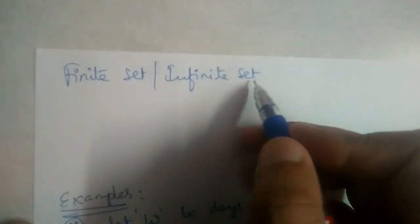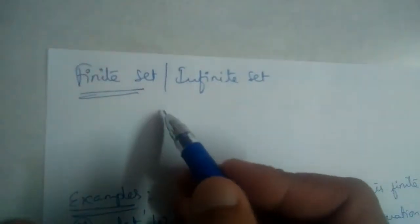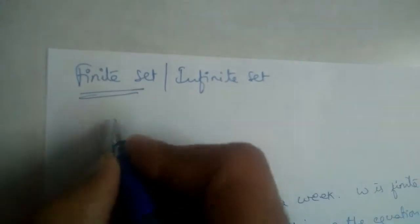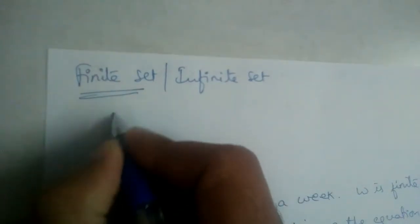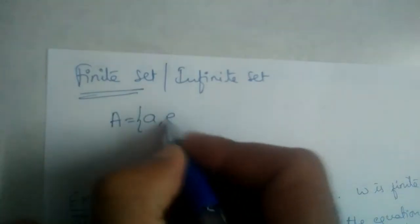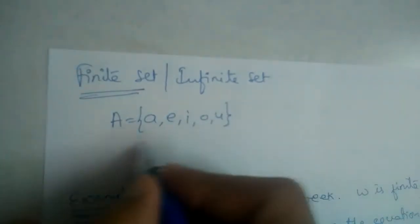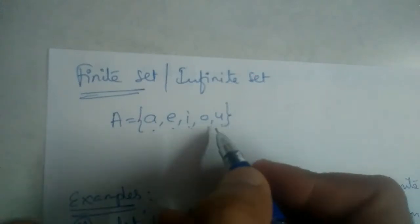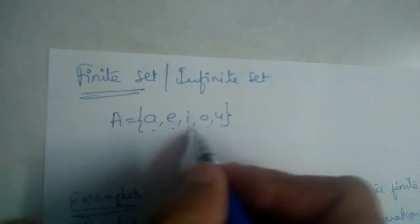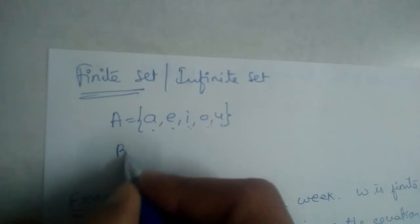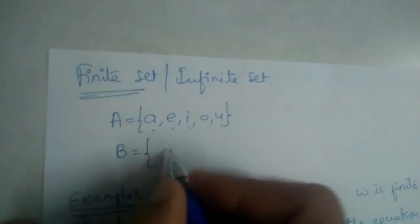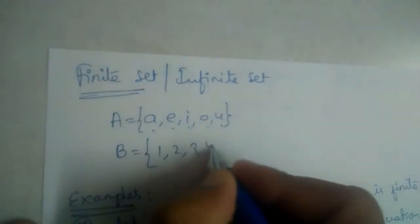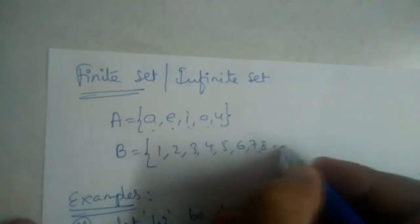Let us see what is a finite set. A finite set is a set in which there are a finite number of elements. For example, A is equal to {a, e, i, o, u} — there are five elements in this, and we are able to count them. So this is an example of a finite set.